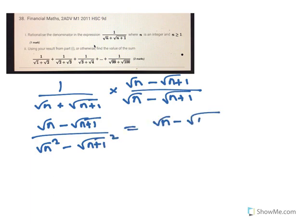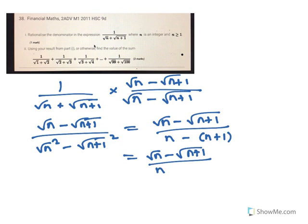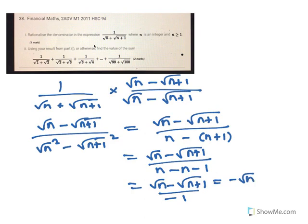So it's root n minus root n plus 1 over n minus n plus 1, which is root n minus root n plus 1 over n minus n minus 1. So that means you're going to get root n minus root n plus 1 over minus 1. So if you change the sign on the top, that's root n plus 1 minus root n.